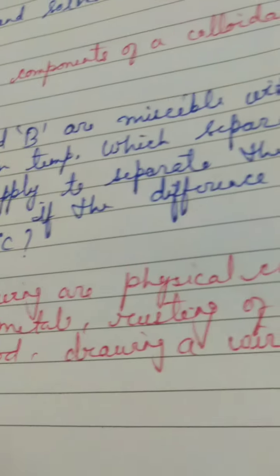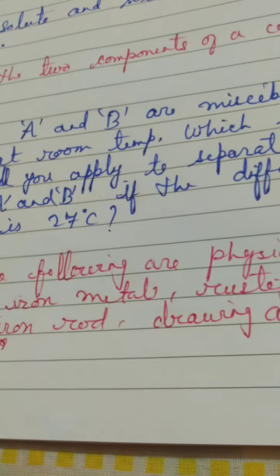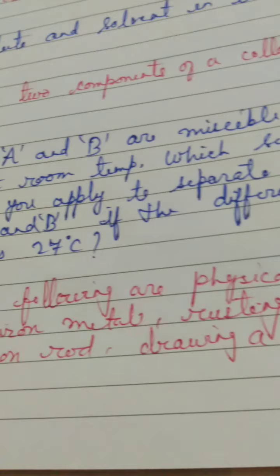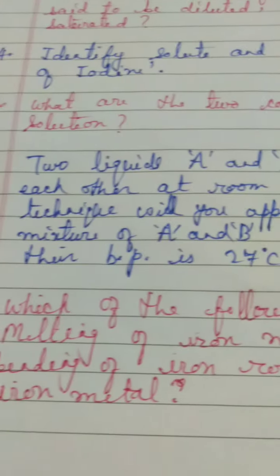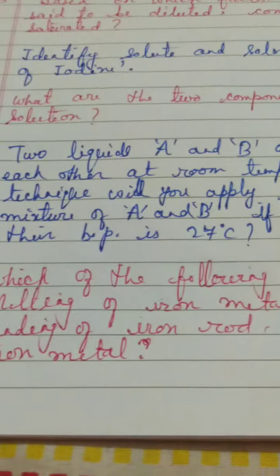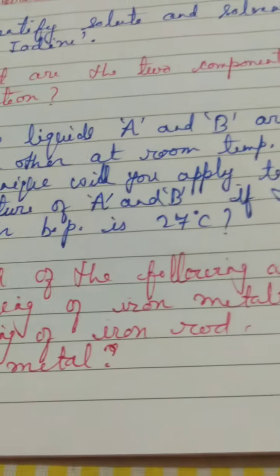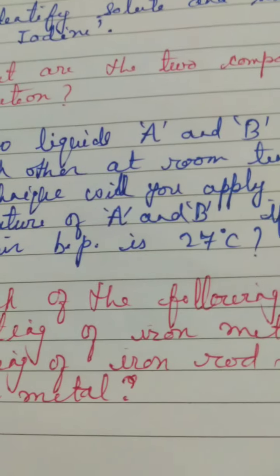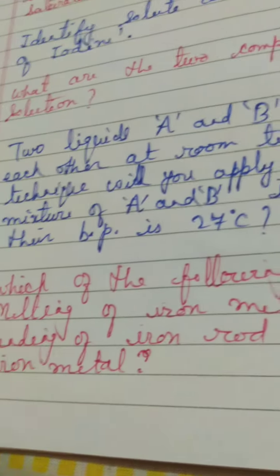This question: Two liquids A and B are miscible with each other at room temperature, means they can dissolve into each other. The liquid-liquid mixture, I refer to this A. Which separation technique will you apply to separate the mixture of A and B if the difference in the boiling point is 27 degrees Celsius?